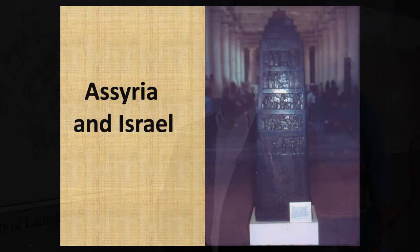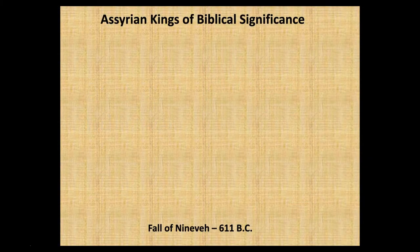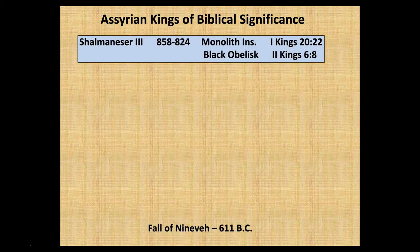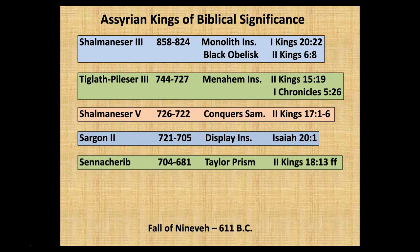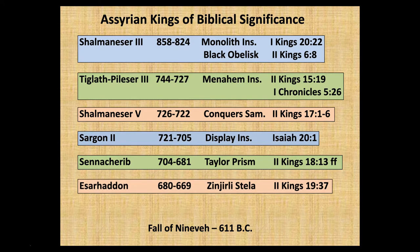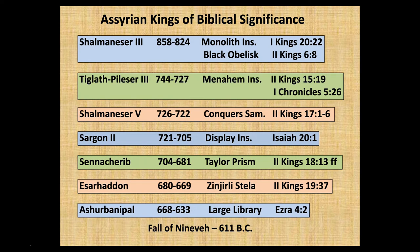Let's look first at Israel and Assyria. On this chart you can see several of the Assyrian kings, the first being Shalmaneser III, who ruled from 858 to 824. We have two major inscriptions we'll look at in a few minutes. Each of the next several consecutive Assyrian kings is mentioned in Scripture for quite some time in the span of history, until the fall of Nineveh in 611 BC.